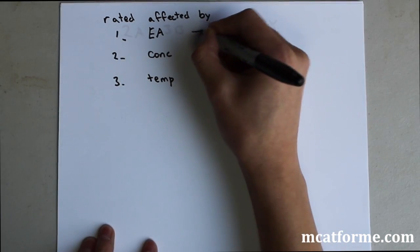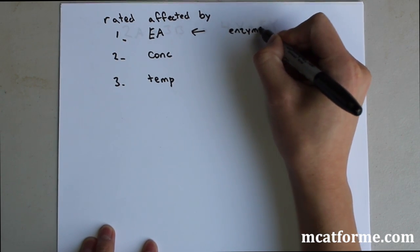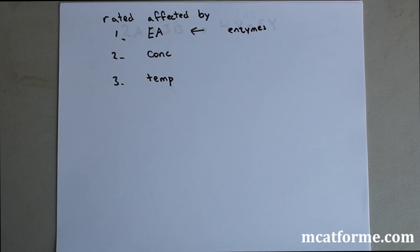What will change this activation energy are enzymes. So you add an enzyme and it'll decrease the activation energy, which will speed up a reaction.